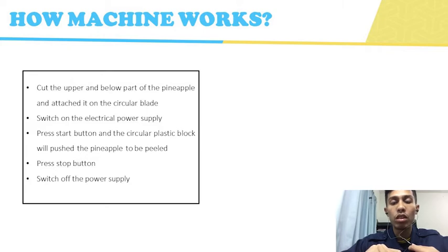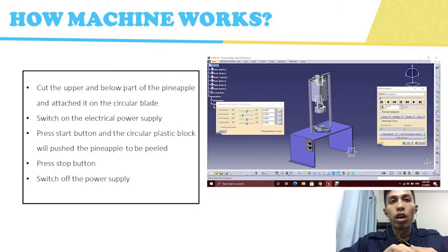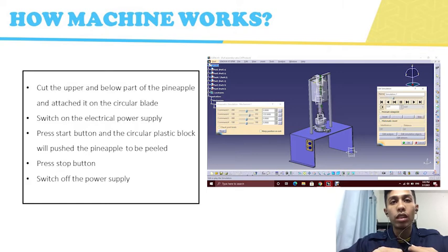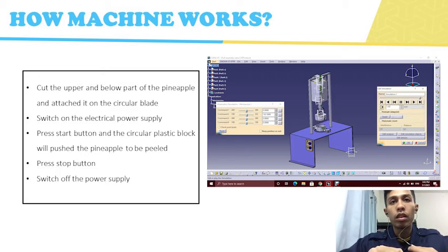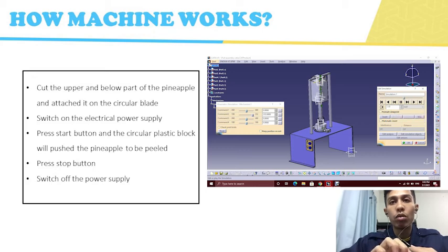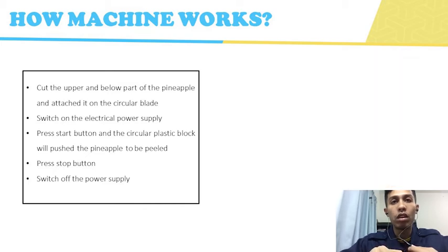We made a simulation video for you to easily understand how our machine works. Based on the video, when you press the start button, the internal part of the electric actuator pushes the circular block down. After the process, you press the stop button and the internal part returns to the origin position.